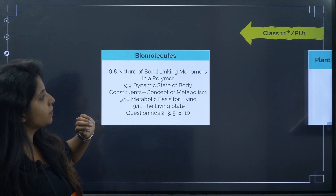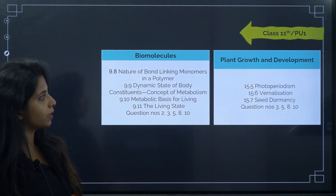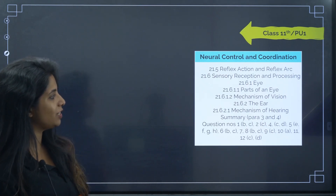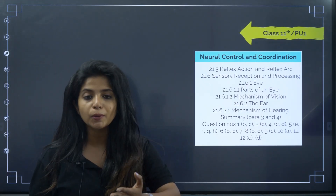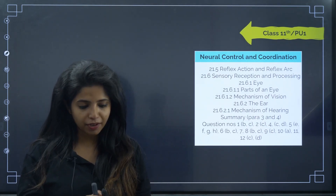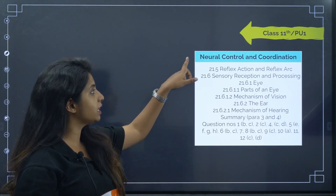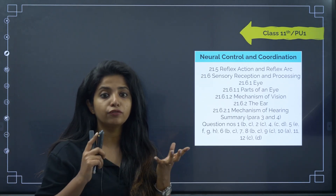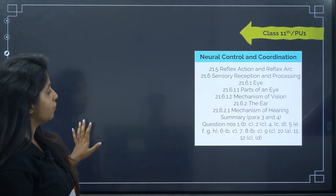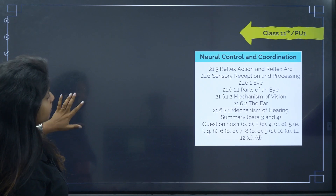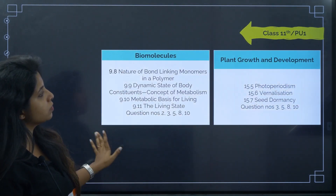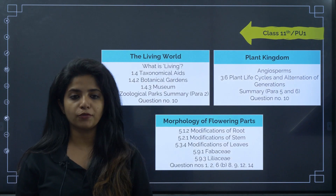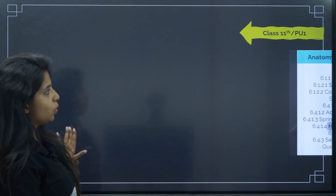Biomolecules, plant growth and development, and neural control and coordination also have large sections deleted — particularly neural control, where deletions are quite significant. If you're not going to refer to the full PDF, at least note down the chapter names so when you get to them you'll know there are deleted portions to watch for. The chapters with partial deletions include: living world, plant kingdom, morphology of flowering plants, anatomy of flowering plants, structural organization in animals, biomolecules, plant growth and development, and neural control and coordination.